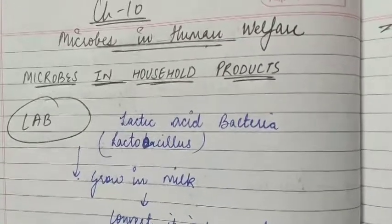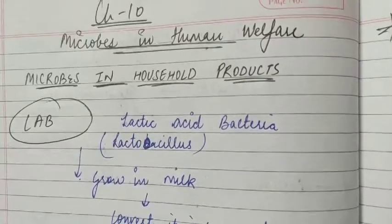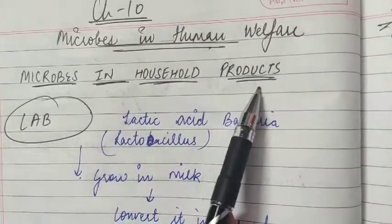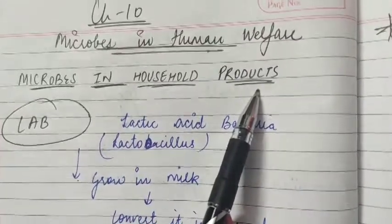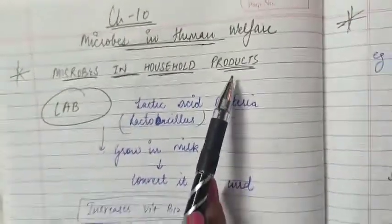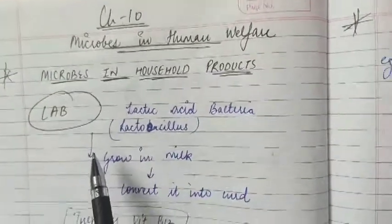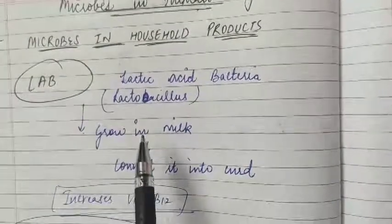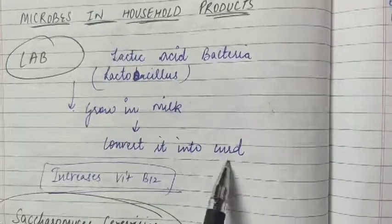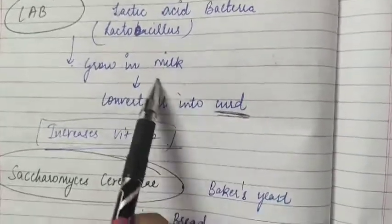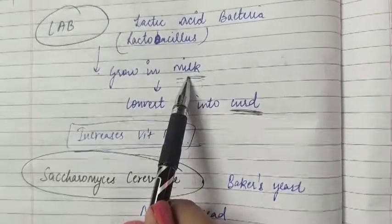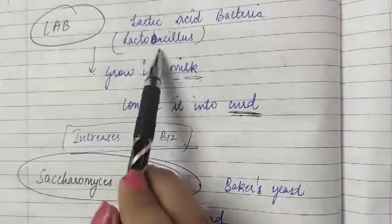Microbes in household products. A common example is the production of curd from milk. How is curd produced? The microorganism involved is Lactobacillus.